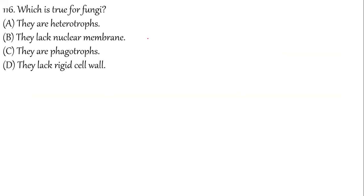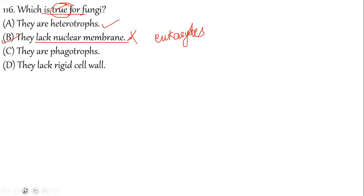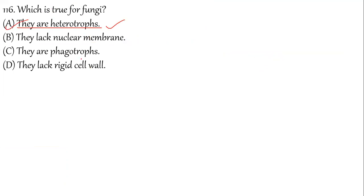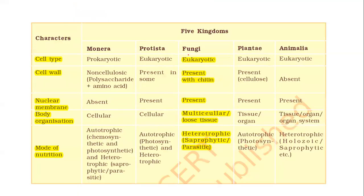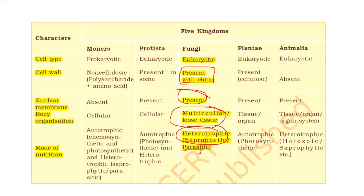Question 116: Which of the following is true for fungi? Fungi are heterotrophs — correct. They lack a nuclear membrane — no, they have a nuclear membrane because they are eukaryotes. They lack a rigid cell wall — no, they have a rigid cell wall made of chitin. They are not phagotrophic; they are saprophytic or parasitic. Option A is correct: fungi are heterotrophic, eukaryotic, with cell walls made of chitin and a nuclear membrane present.